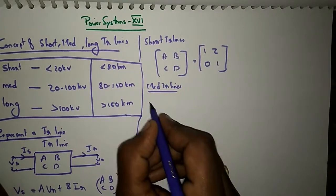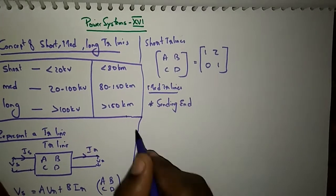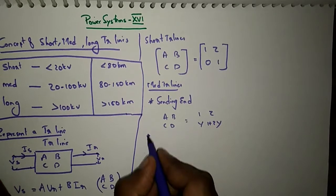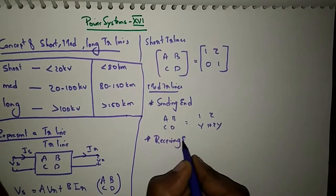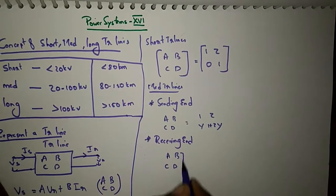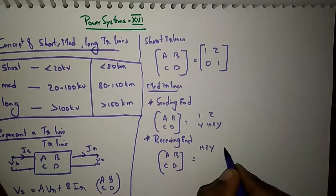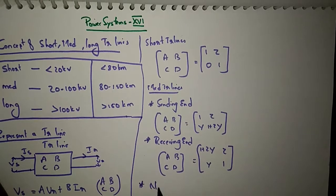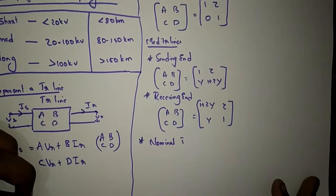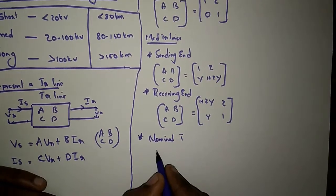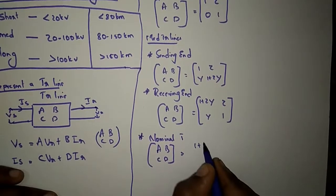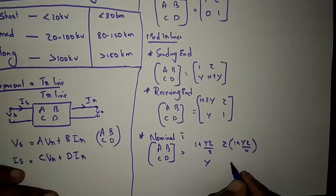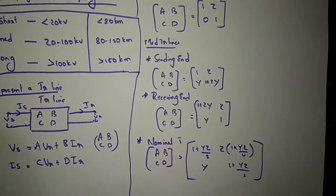For medium transmission lines there are different types. For the sending-end pi (nominal π) type, the ABCD values are: A = 1 + ZY/2, B = Z, C = Y(1 + ZY/4), D = 1 + ZY/2. For the receiving-end type, the ABCD values are: A = 1 + ZY, B = Z, C = Y, D = 1. For the nominal T method, the ABCD values are: A = 1 + YZ/2, B = Z(1 + YZ/4), C = Y, D = 1 + YZ/2.